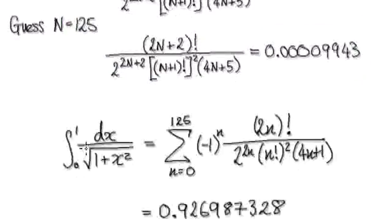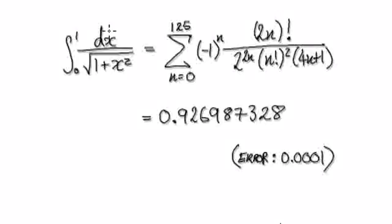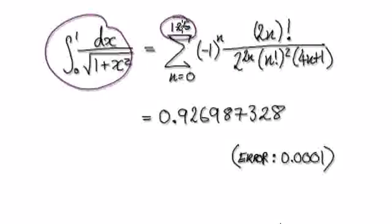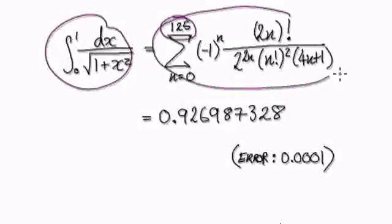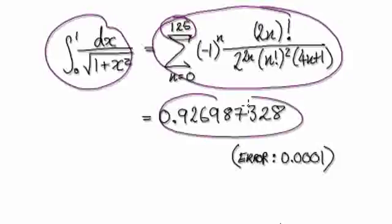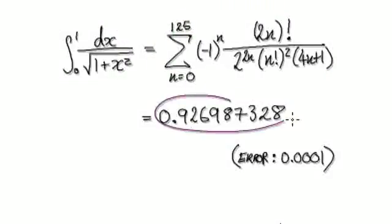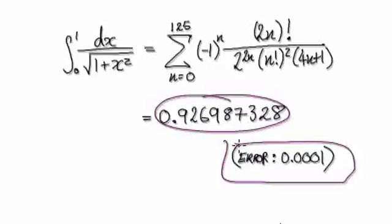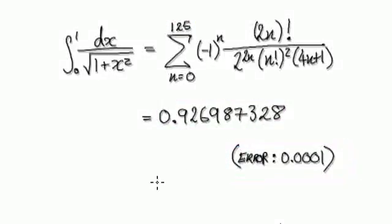So going back to here — to integrate this, if you do it up to capital N equals 125, then this thing here will equal this. And now we can be 100% sure that this will lie within our required level of accuracy. So we will need 125 terms.